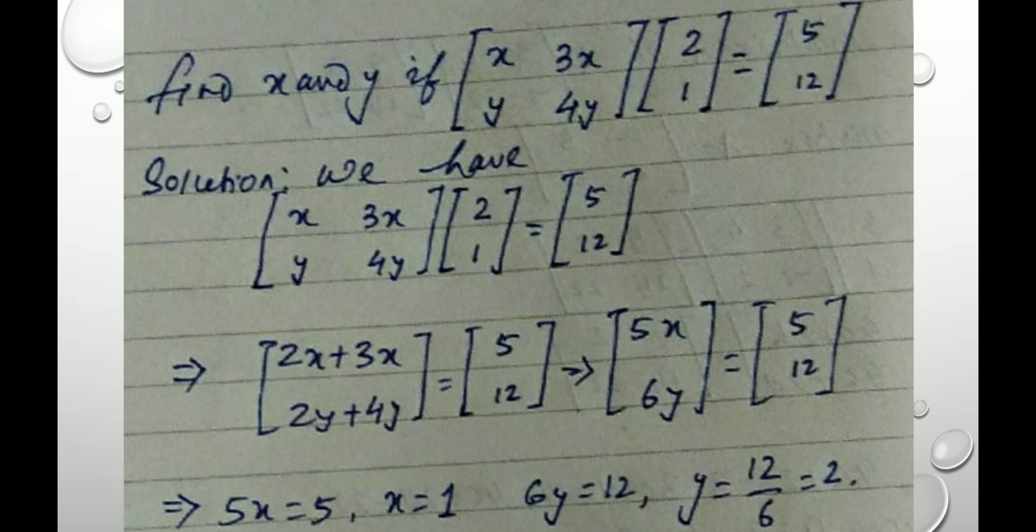Next, find X and Y if X, 3X, Y, 4Y is multiplied with a column matrix 2, 1. That's equal to the resultant matrix is also a column matrix, that is 5, 12.